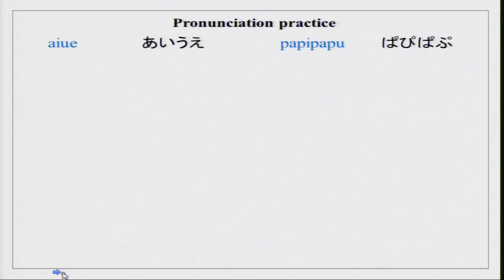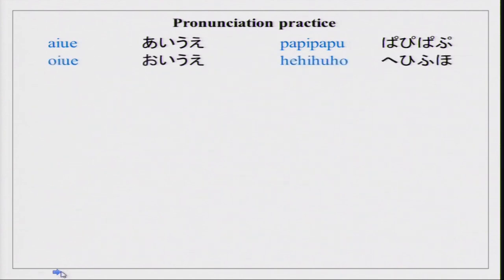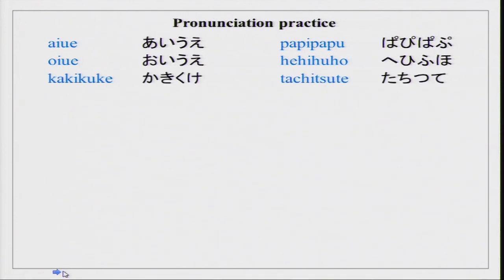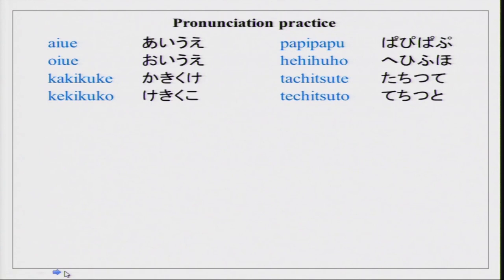Now, just for pronunciation practice, so that you get used to the sounds — you understand hiragana — we will just practice these randomly placed hiragana. You can repeat after me please. Aaiou e. Papi papu. Oiu e. Heihifuhou. Kakikuke. Tachitsute. Kekikuko. Tachitsuto.